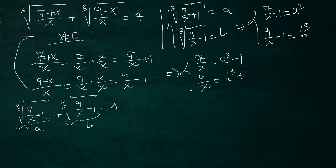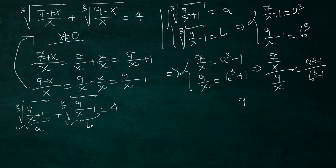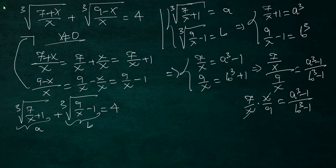Now I'm going to divide side by side. So (7/x) divided by (9/x) equals (a³ - 1) divided by (b³ + 1). Dividing the fractions, we keep the first fraction and multiply by the inverse of the second, which gives x/9. The x's cancel, leaving 7/9 = (a³ - 1) / (b³ + 1).